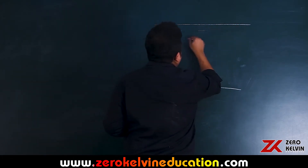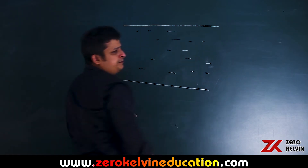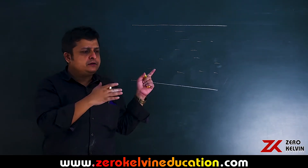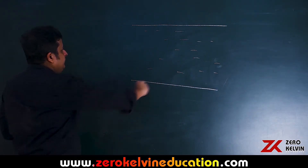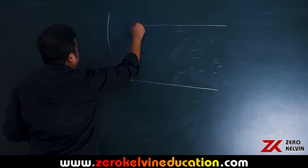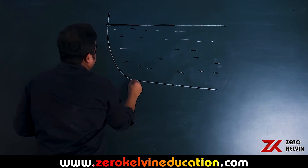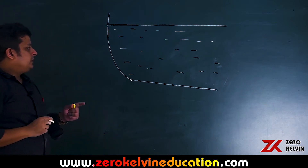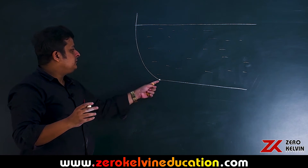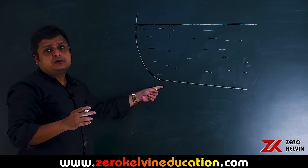Let us take a vessel like this. In the previous case, the wall of the vessel was vertical. Now, here, let us not make it vertical — make it curved in this way. The height and other dimensions are given. We would like to find out the force due to liquid pressure on this curved surface.